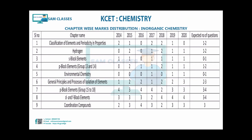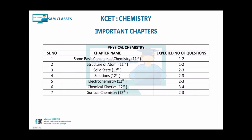For inorganic chemistry: periodic table and periodicity - one to two. Hydrogen: around one to two. S block: zero to one. P block of 11th (groups 13-14): one to two. Environmental chemistry has recently gotten more weightage - zero to one. Isolation of elements is a removed topic. P block (groups 15-18): important. D block: important. Coordination compounds: very important. This is the analyzed data from 2014 to 2020.